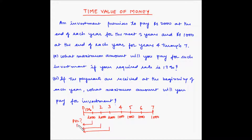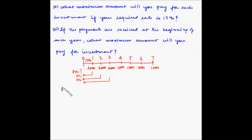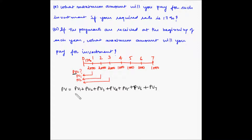Let's say the first component is PV1. PV1 at 13% will grow to rupees 2,000 at the end of the first year. PV2 will grow to rupees 2,000 at the end of the second year at 13% per annum, and so on. So basically, the total PV equals PV1 plus PV2 plus PV3 plus PV4 plus PV5 plus PV6 plus PV7.